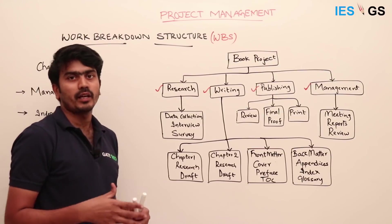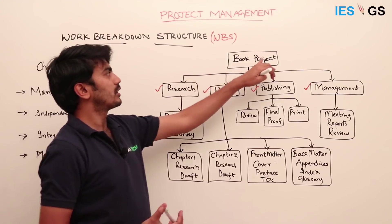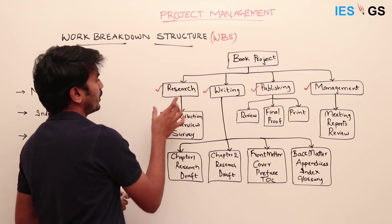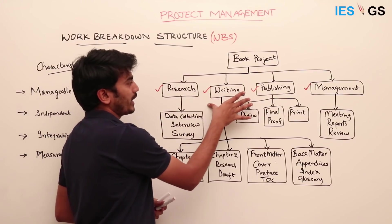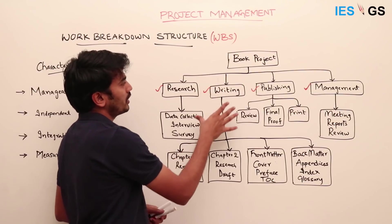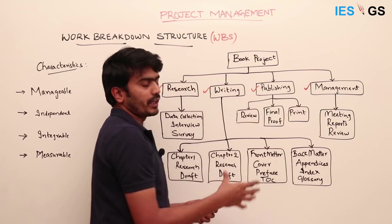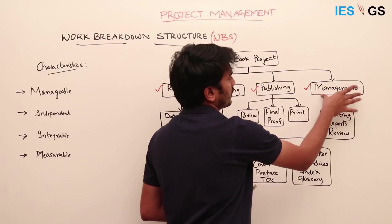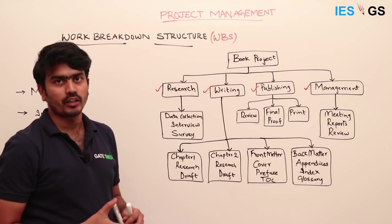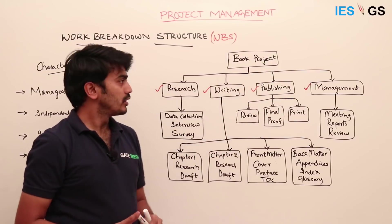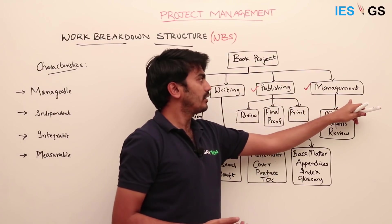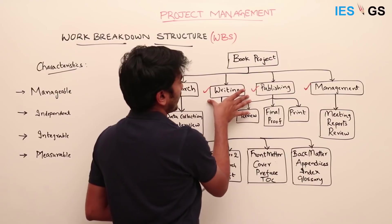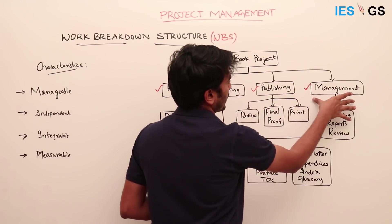In order to plan, write, and publish a book, activities include research, writing the actual content, and the publishing part — how many copies to print, proofing, and so on. Management involves reviewing and approving the book contents. These four major elements are largely independent: writing happens first, then management review, then publishing. They are managed separately with different stakeholders involved.